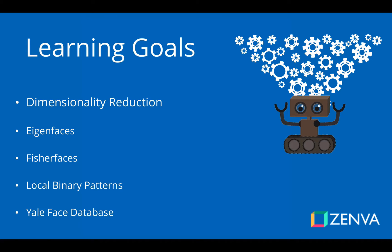Eigenfaces and Fisherfaces are both dimensionality reduction techniques, so I'm going to discuss what dimensionality reduction is — it's not as scary as it sounds, trust me. We'll be building our AI using two different techniques, Eigenfaces and Fisherfaces, and then we'll learn a third technique which is fundamentally different from the previous two. It's actually more accurate in most cases than Eigenfaces or Fisherfaces, and that's called local binary patterns.